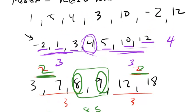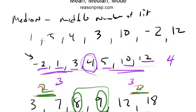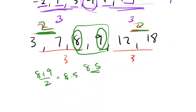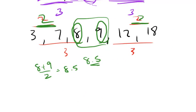You can't find the median of an unordered list, because you might think you see the middle number when you don't. You have to put it in order first in order to figure that out. So that is the median.